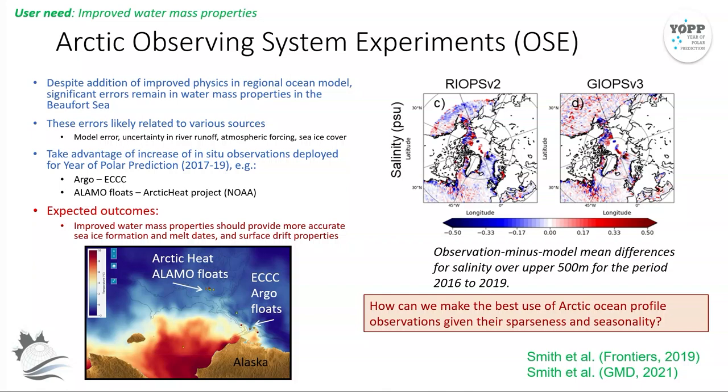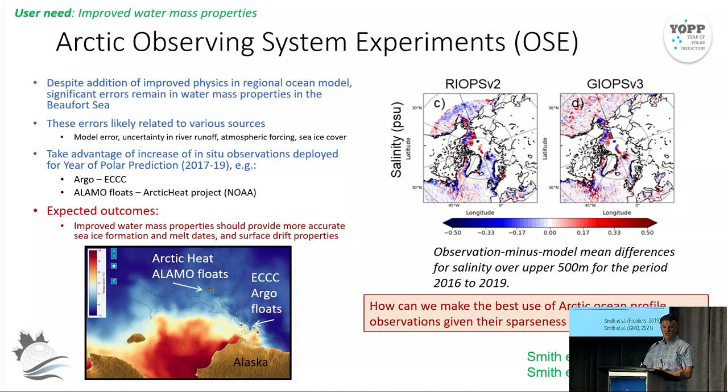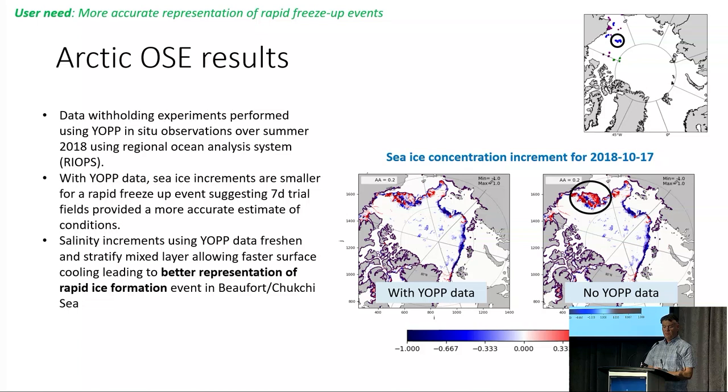We also conducted observing system experiments using the YOP data. Looking at the top right panels, you can see in the regional and global systems - REOPS and GOPS - some errors in salinity over a particular analysis period, with the largest errors in the Arctic basin. We wanted to see how we could use observations deployed through YOP to improve some of these errors. We also contributed some Argo floats and made use of the ALAMO floats - mini Argo floats deployed as part of the NOAA Arctic Heat project.